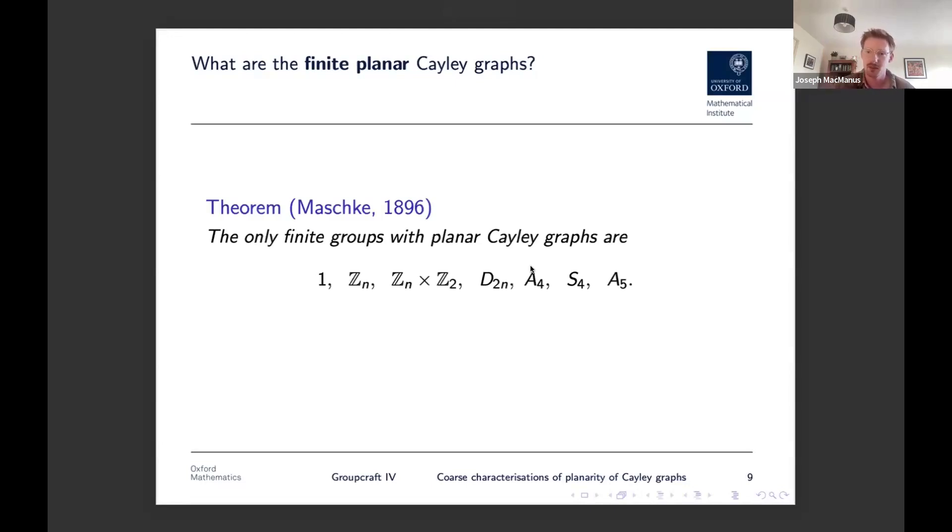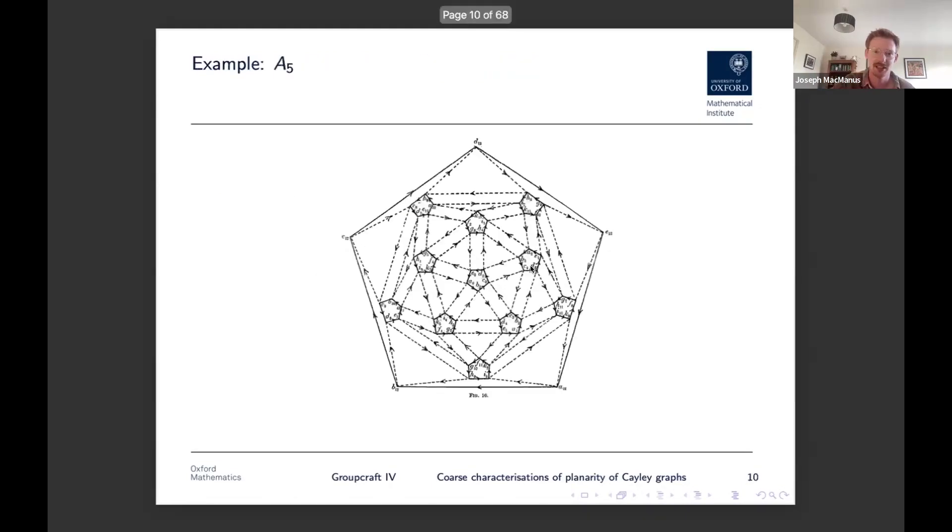These are exactly the finite groups which act by homeomorphisms faithfully on a sphere. It turns out interesting. But A5 has 60 elements. How the hell does that have a planar Cayley graph? I mean, it looks something like that. It's crazy. This is a figure from Maschke's paper. Quite enjoy it. He also draws all of the other planar Cayley graphs. So if you do look at that paper, look out for the figures and try not to look at anything else, is my advice.